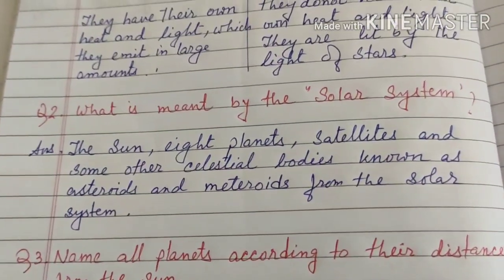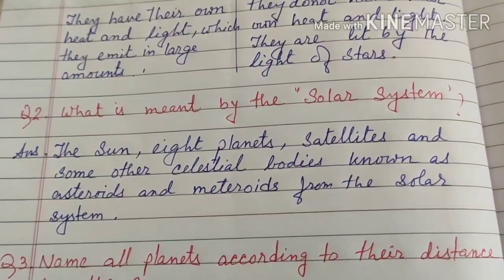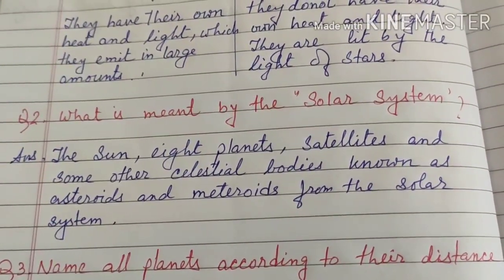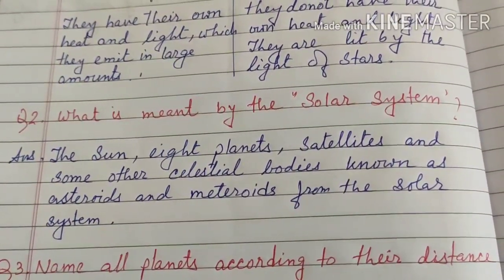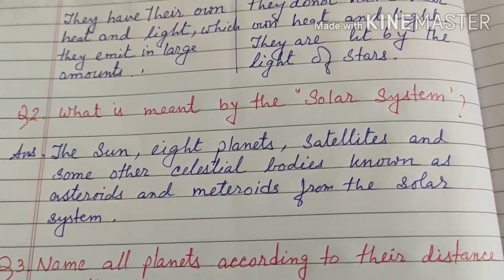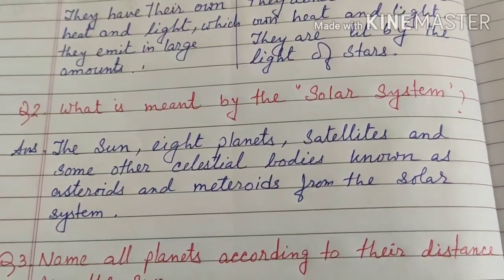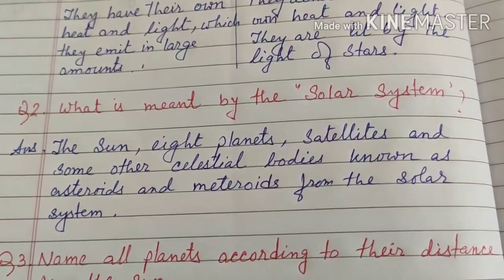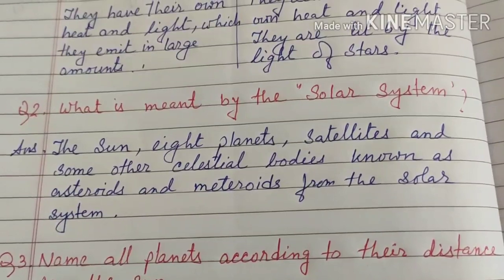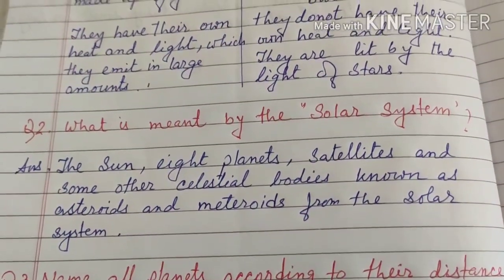What is meant by the solar system? The Sun, eight planets, satellites, and other celestial bodies such as asteroids and meteoroids together form the solar system — the full family of the Sun.